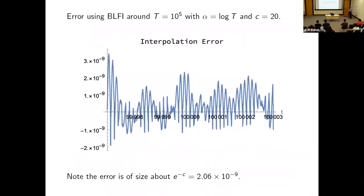Here is the error in this interpolation formula around t = 10⁵ with α = log t and c = 20. The actual error matches the expectation very well: the expected error comes from 1/sinh(c) ≈ e^{−c} ≈ 10^{−9}, which is exactly what you see. You can make it more accurate by taking c larger.